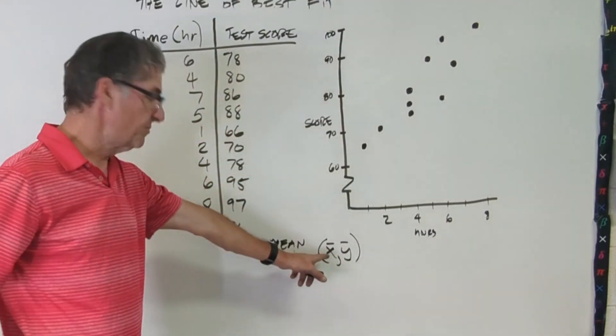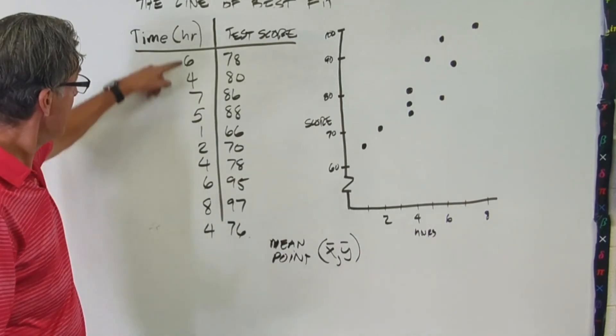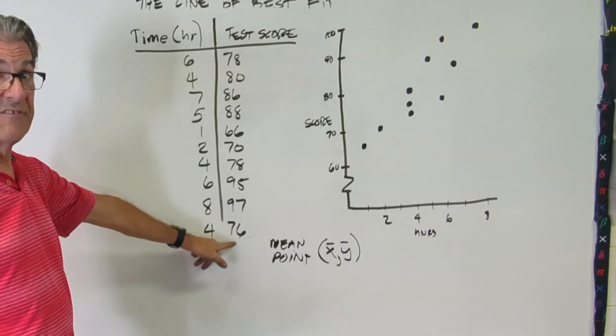And so remember, x bar is the average of x, y bar would be the average of y. So go ahead and pause the video and figure out the mean or the average of the x values and the mean or the average of the y values.